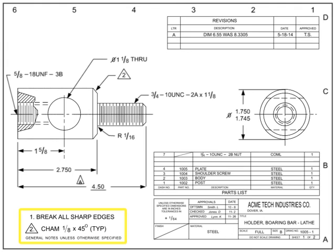The notes list conveys information that the call-outs within the field of the drawing do not. It may include general notes, flag notes, or a mixture of both. Traditional locations for the notes list are anywhere along the edges of the field of the drawing, but most are typically found in the upper left or bottom left corners. General notes apply to the entire drawing; examples include tolerances, general handling or material specs, color specifications, testing requirements, or packaging instructions.